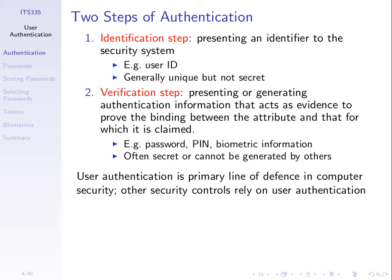The verification information is often secret, or something others cannot create or generate. For example, a fingerprint is not secret — you can take a photo and see it — but it's hard for others to replicate. So it serves a role in the verification step. Most of our discussion will focus on the verification step, and the main thing many users use for verification is passwords. There are other techniques and we will mention them towards the end.